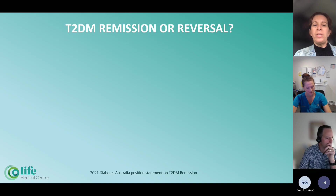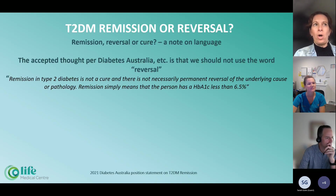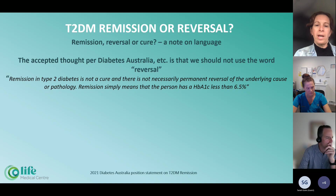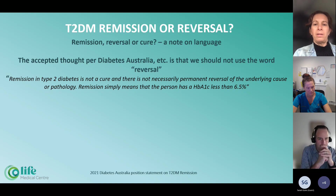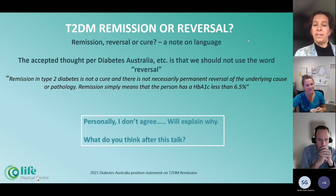The question is: type 2 diabetes remission, or do we reverse it? That's become a fairly hot point of debate around the world. According to Diabetes Australia, the term remission should generally be used rather than the word reversal. They say that remission in type 2 diabetes is not a cure and there is not necessarily permanent reversal of the underlying cause or pathology — remission simply means the patient has a HbA1C less than 6.5%. However, I'm going to explain through this presentation that I don't necessarily agree with that, and I'd love to hear your thoughts after this talk as well.